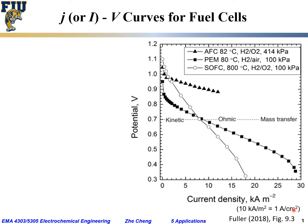We have three types of fuel cells here. The black solid triangle represents the AFC — alkaline fuel cell — operated at 82°C with pure hydrogen as fuel and pure oxygen as oxidant, pressurized at 414 kPa, roughly 4 atmospheres.